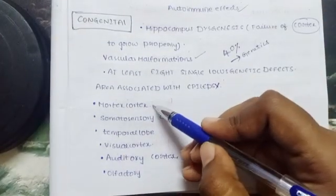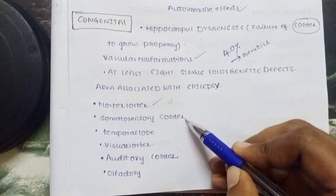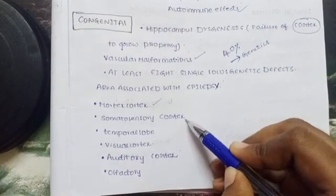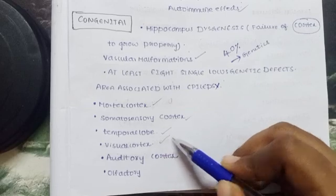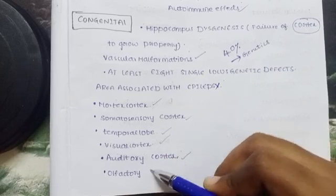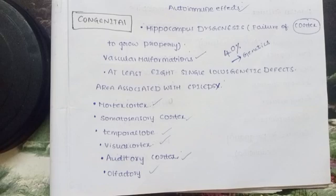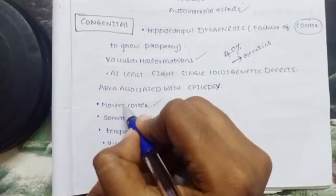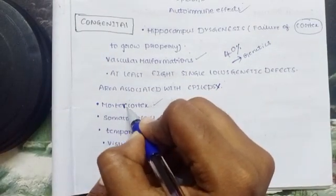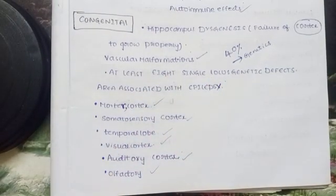Six important areas related to epilepsy include: motor cortex, somatosensory cortex, temporal lobe dysfunction, visual cortex, auditory cortex, and olfactory cortex. Abnormality in any of these cortical areas — whether congenital or acquired brain damage — can lead to epilepsy.